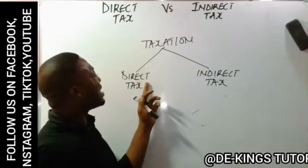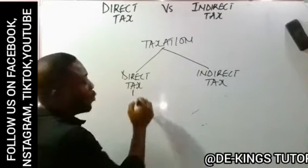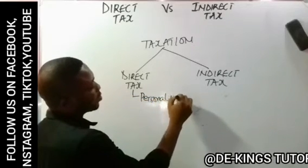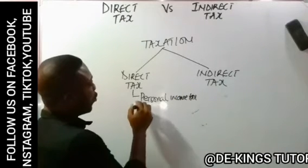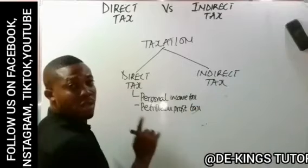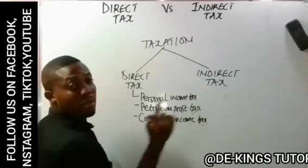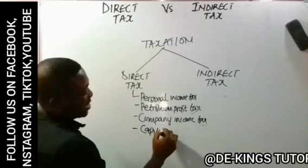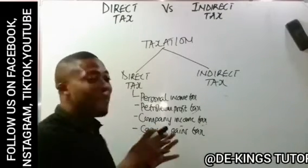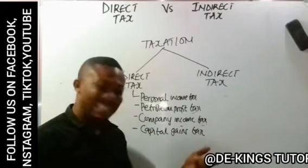Direct taxes are taxes that are imposed directly on the income of an individual or a company. For example, the types of direct tax we have include: personal income tax, petroleum profit tax, company income tax, capital gains tax, and many more. These are taxes imposed directly on the income of an individual or company, or on the tax base directly.